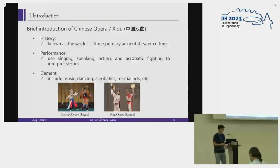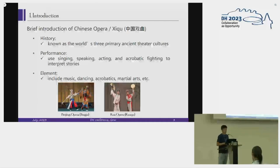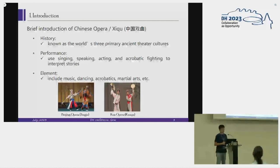Before we start, I want to give some brief introduction of Chinese operas. We usually use the term 'Chinese opera' to denote, for example, Beijing opera. From the perspective of performing arts or context, Chinese opera is a little bit different from the definition of Western operas. Chinese opera has a long history which can be traced to 800 BC, and it is known as one of the world's three primary Asian theater cultures, along with Greek tragedies and comedies and Indian Sanskrit dramas.